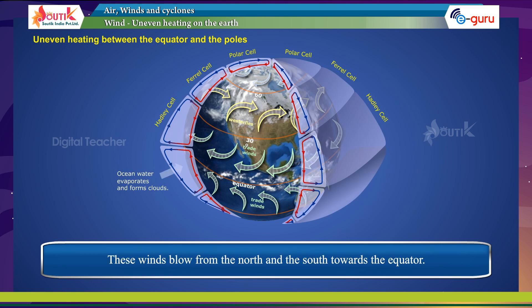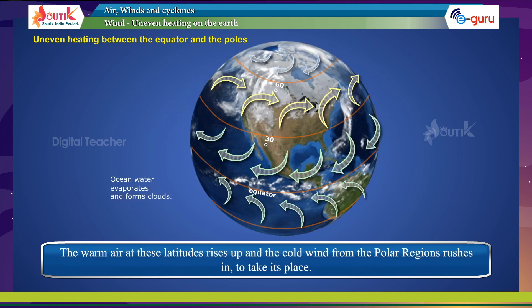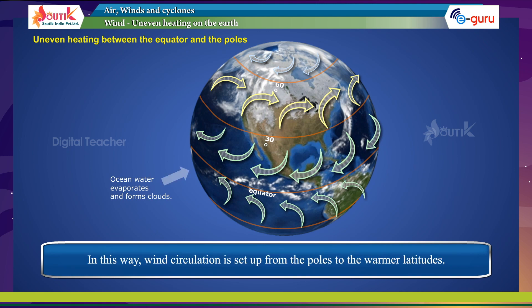This wind blows from the north and the south towards the equator. The warm air at these latitudes rises up and the cold wind from the polar regions rushes in to take its place. In this way, wind circulation is set up from the poles to the warmer latitudes.